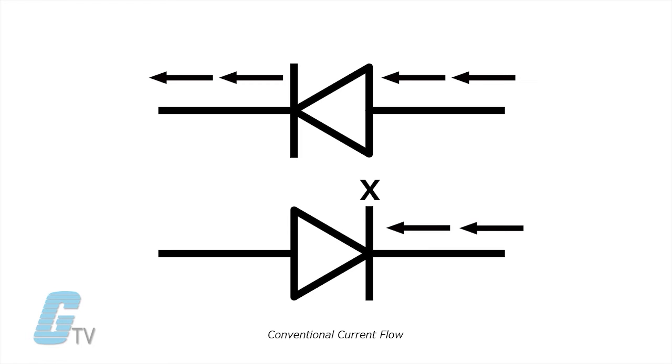Conventional current flow reads current flowing in the opposite direction of the electrons and others may read the same diagram looking at the electron flow.